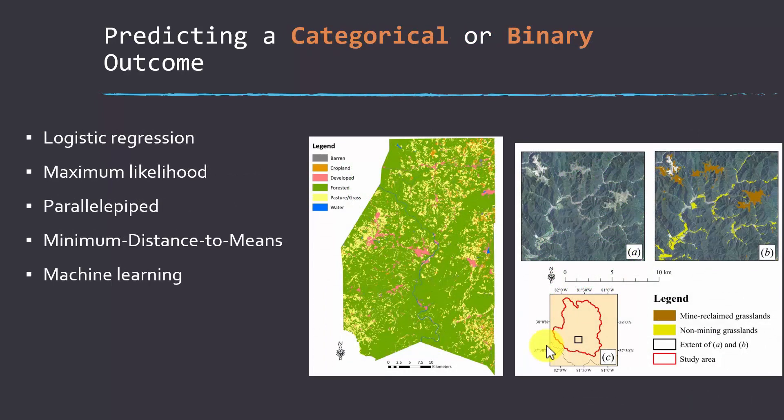We can also predict things that are categorical — so instead of something continuous, you're predicting types of things, such as types of land cover, types of wetlands, types of forest, or types of development. It's nominal data. A special case of this is binary classification, where you're predicting one thing or another — upland versus wetland, private versus public, or forest versus not forest. Lots of techniques are available to make predictions of categories. Logistic regression, for example, is a version of regression for classification problems. If you've done remote sensing, you may be familiar with parametric methods like maximum likelihood, parallel pipette, and minimum distance to means, but machine learning can also be used in this context.